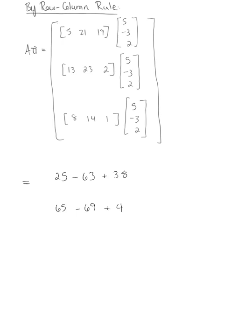And last but not least, we have 8 times 5 is 40, minus 3 times 14 gives us minus 42, and then 2 times 1 is 2.